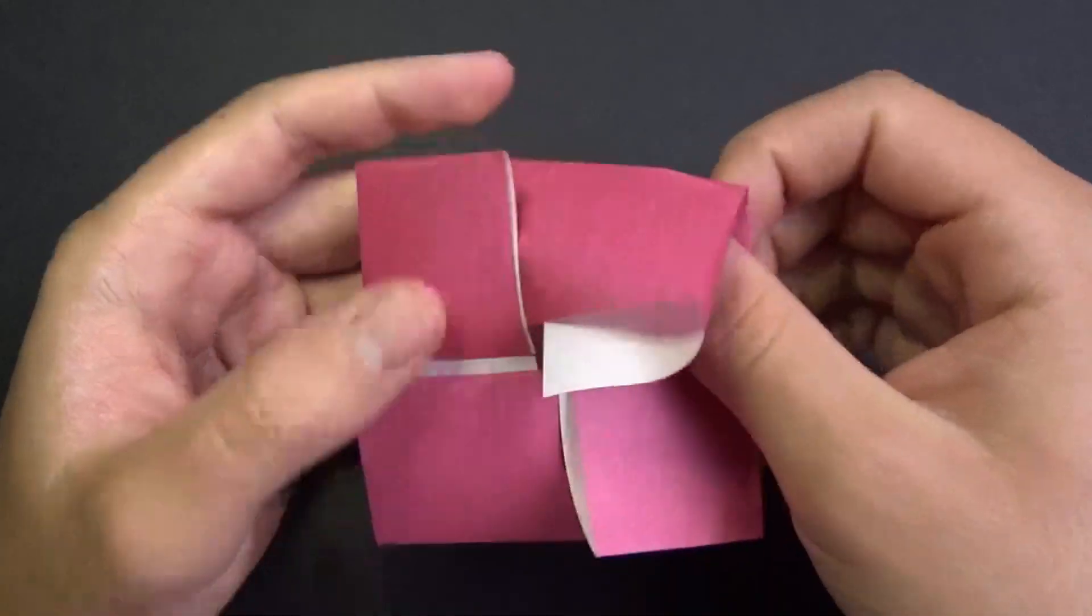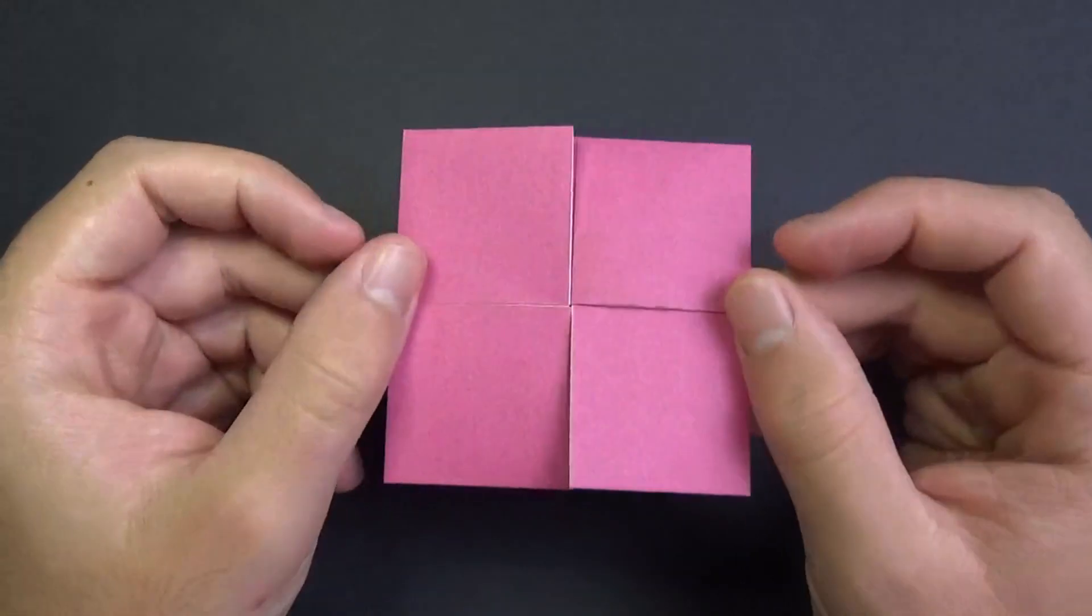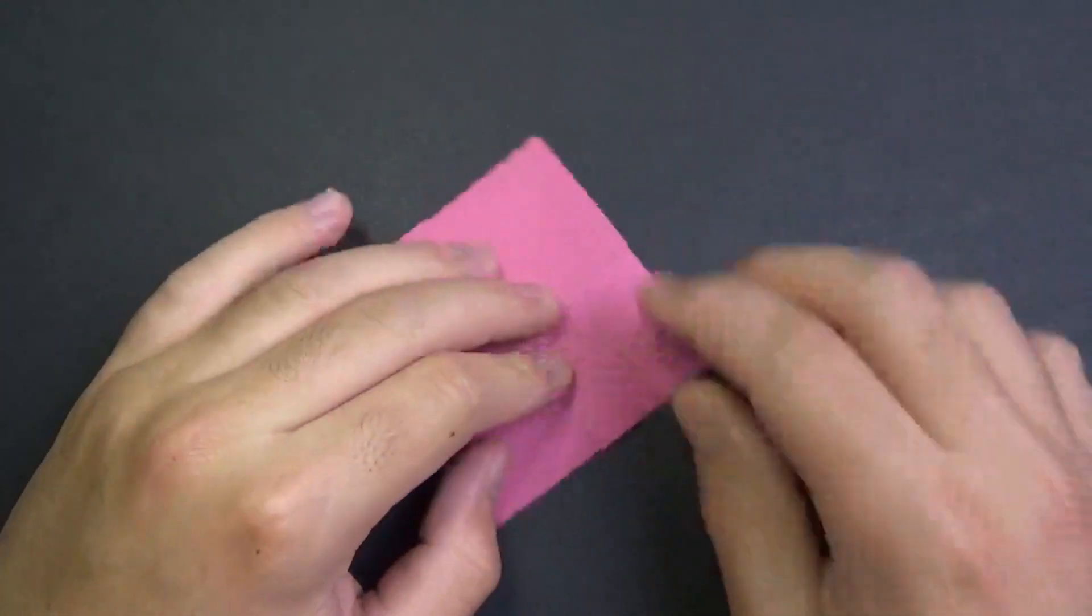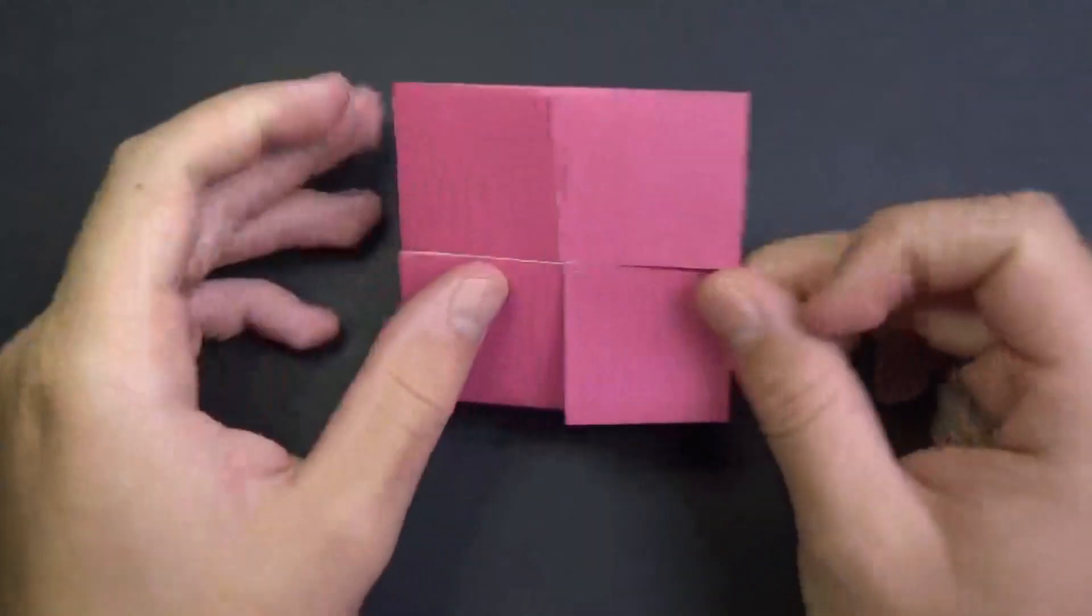So, shove all that in there. And then, you'll get something like this. And crease it sharply, flatten it. Okay, so this is what it looks like.